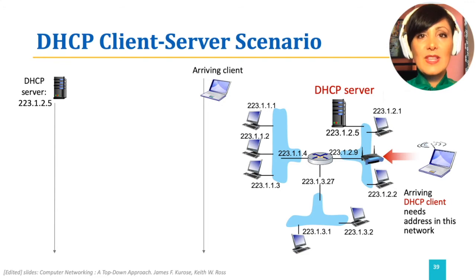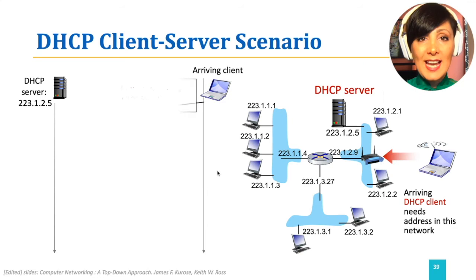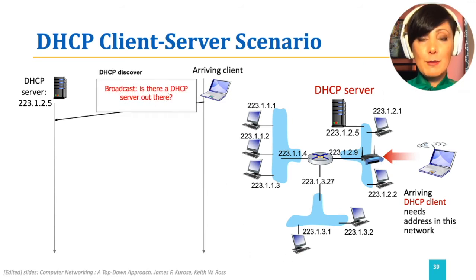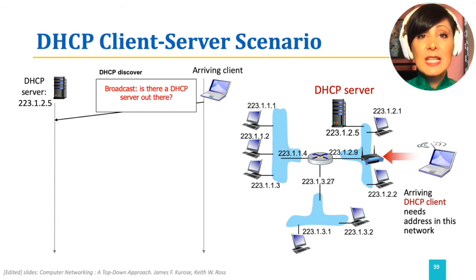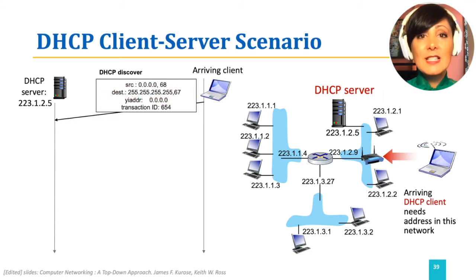When this host comes into the network, it first broadcasts a DHCP discover message, trying to find the DHCP server. It sets the destination address of the datagram to 255.255.255.255, the IP broadcast address, and sets the source of the IP datagram to 0.0.0.0, the default address.